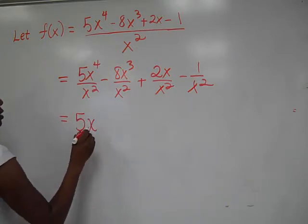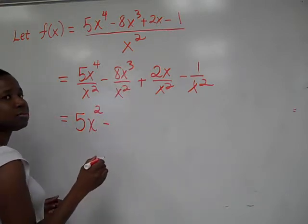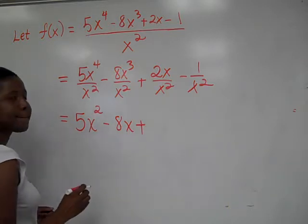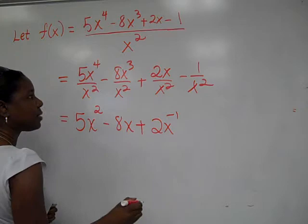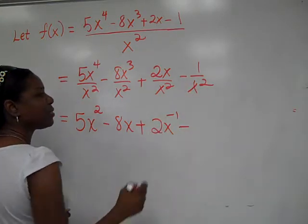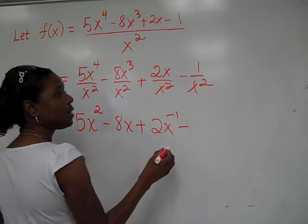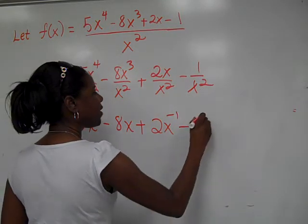Now, simplify that. What is x to the 4th over x squared? Subtract the exponents. That's how you do that. Subtract the exponents when you're dividing and the bases are the same. So we get 5x what? Squared. Minus. Again, what do I get when I subtract the exponents? 8x plus, what about this one? 2x to the negative 1. Fabulous. Minus, what about this one? What do we need to do with that piece? x to the what? Negative 1. Negative 1? Negative 2. Negative 2. Fabulous.